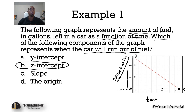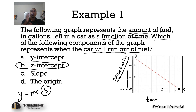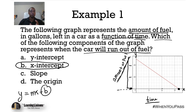Let's go through each answer choice. The Y intercept — in Y = MX + B, B is your Y intercept — that's your initial value, your starting value. In this situation, that would be the amount of fuel the car has at the beginning. Slope would represent how quickly we're running out of fuel — fuel per time, such as gallons per mile or gallons per hour.